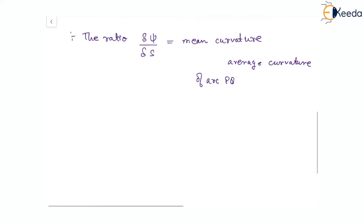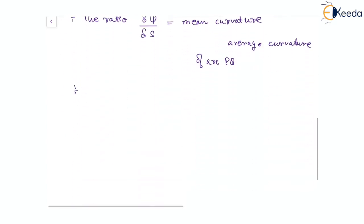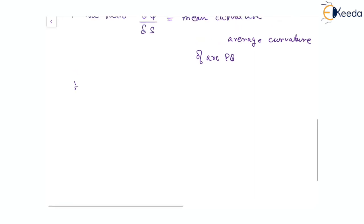Now if we start limiting point Q to P, del s will tend to zero. As point Q comes closer to P, del s will approach zero. The limiting value of this mean curvature will be given when